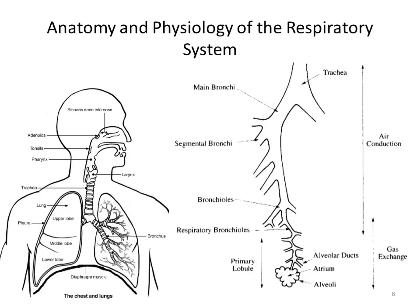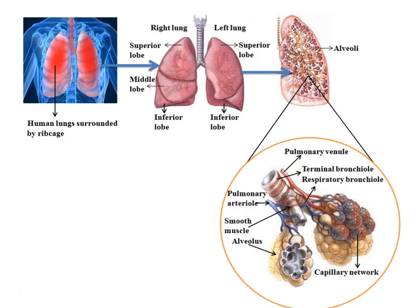Looking at the total respiratory system: trachea divides into bronchi, bronchi again divide into bronchioles, and finally lead to air sacs called alveoli. This colorful picture depicts that the alveoli are surrounded by the hairnet capillary network, from which blood oxygen and carbon dioxide are exchanged.